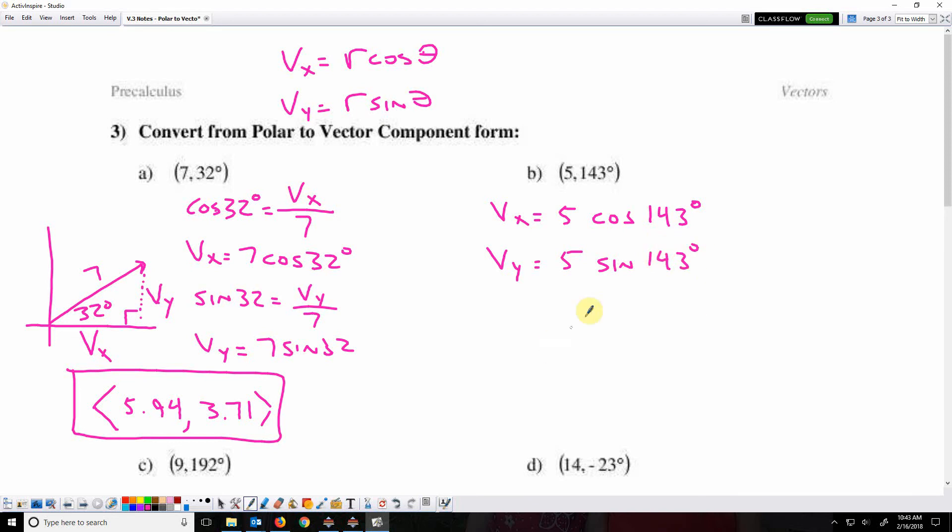Okay, so when you type that in your calculator, you're going to get the x component is negative 3.99, the y component is 3.01.